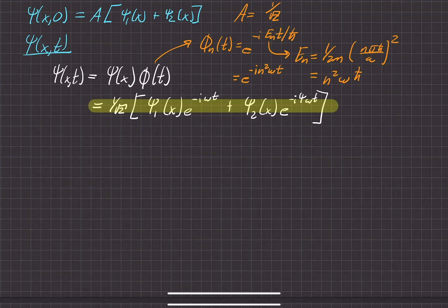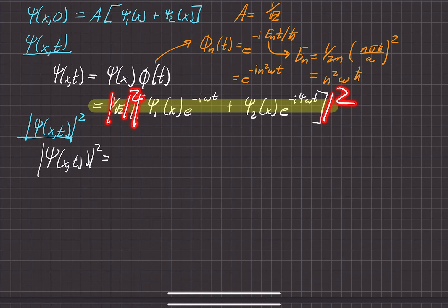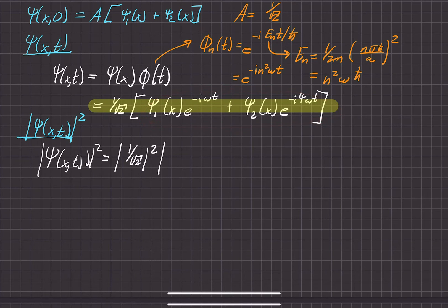Now moving on to the magnitude squared of the wave function — the second part of this question — we've got to solve for that. Luckily, we were able to find the general form shown above. So whenever we do the magnitude squared of this, that's going to be magnitude squared of each part. We'll go ahead and take care of this part first. Before we foil it, the question requests us to do it in sinusoidal form.